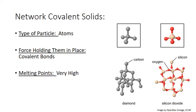Network covalent solids are made up of neutral atoms that are covalently bonded together into a large network. Examples include things like diamonds and silicon dioxide which makes up quartz and glass. The minerals found in rocks are often network covalent solids.